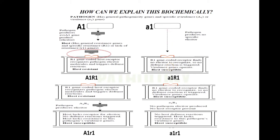Virulence is a relative term — every pathogen has the capacity to cause disease, but it depends on the plant's genetic condition whether it allows the pathogen to cause disease or not. If a pathogen produces effectors that can be recognized by a plant R gene, we call it AVR. If it does not produce specific effectors recognizable by an R gene, we call it virulent. The pathogen is the same; the only difference is in the production of effector molecules.